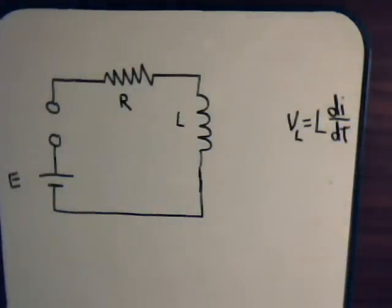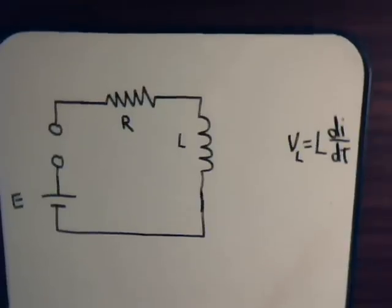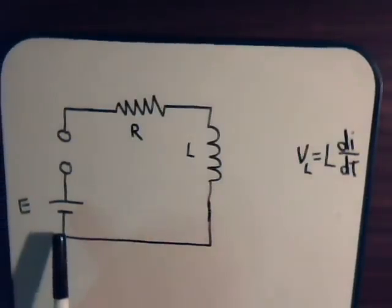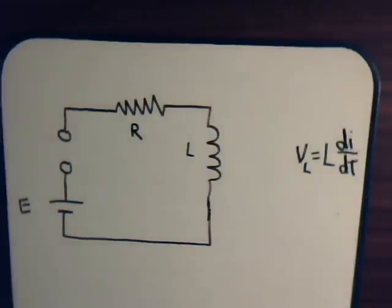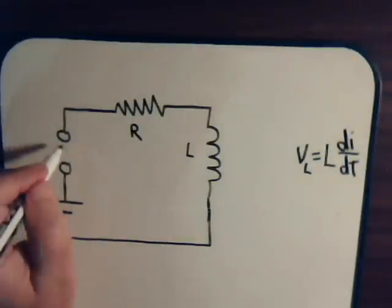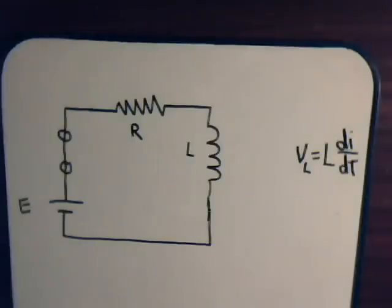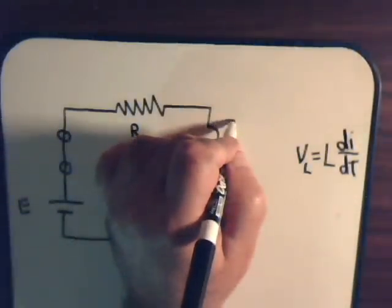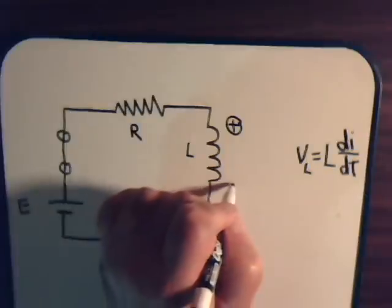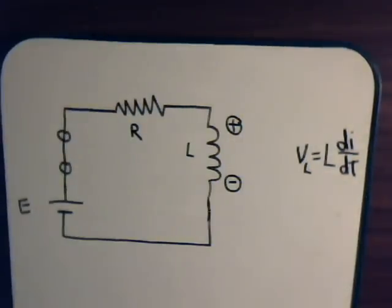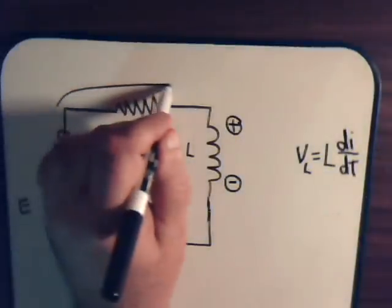In videos 54 and 55 we discussed the transient growth currents through an inductor. Now in this video we want to discuss the transient decay current through an inductor. In the previous videos, we had just a constant voltage source, a resistor, and an inductor. When we threw a switch connecting the battery to the circuit, initially there was a voltage induced across this coil.